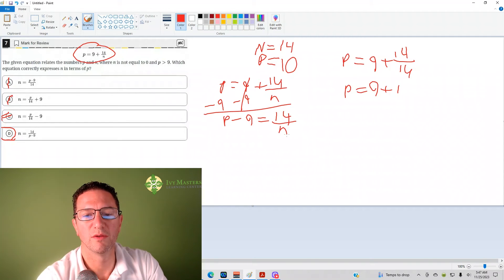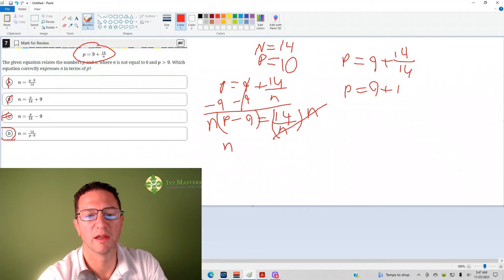And then to get rid of the fraction, I can multiply both sides by n. And so the n's cancel here.